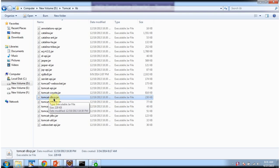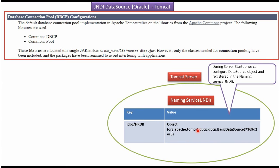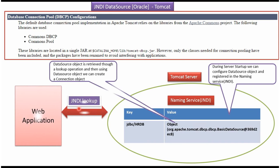You can see here tomcat-dbcp.jar inside the Tomcat lib folder. During server startup we can configure a DBCP data source and register it in the naming service. An example of a naming service is JNDI, and here you can see the key is jdbc/HRDB and the corresponding object is a DBCP BasicDataSource object. Using a JNDI lookup we can get this data source object in the web application, and once we get the data source object we can get a connection object and communicate to the database.